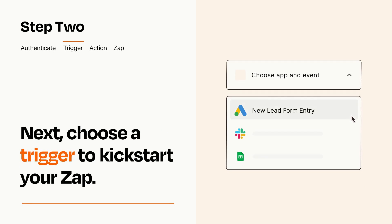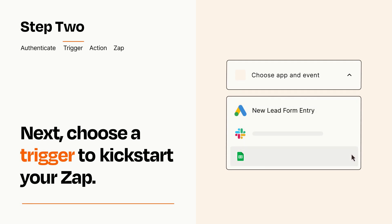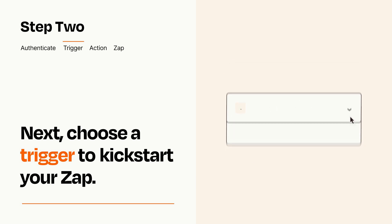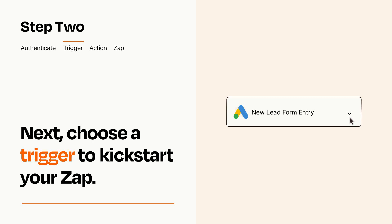Now let's set up your trigger, which is the event that starts your Zap. Pick the trigger event that you want from the list. When you set up this step, your Zap will pull in test data from your trigger app that you'll see later when setting up your action app.